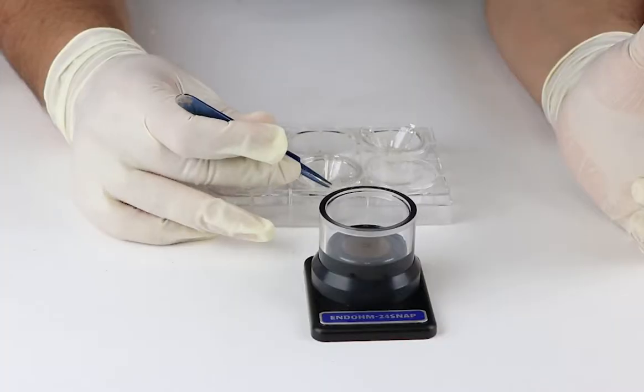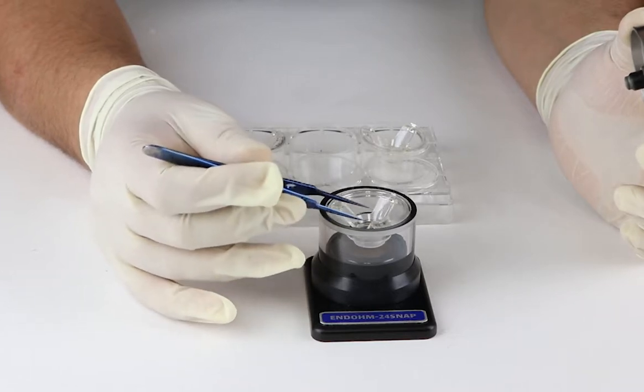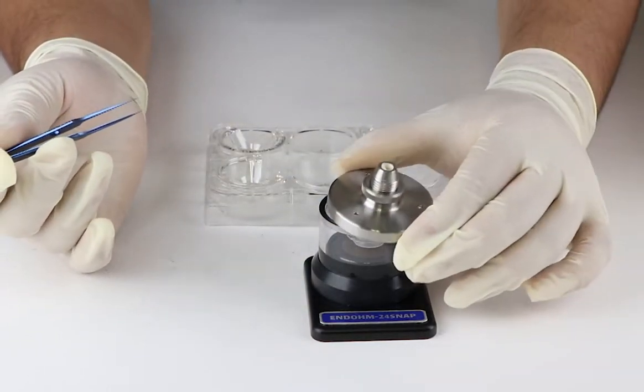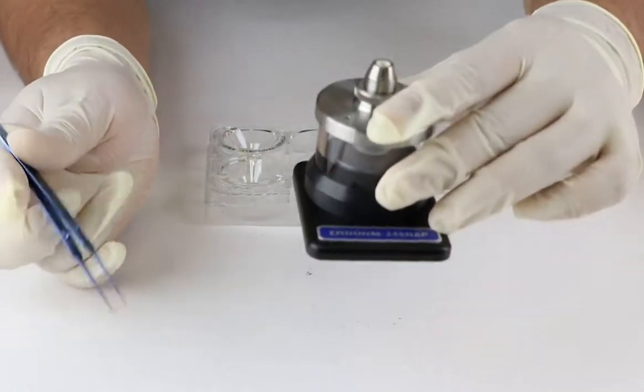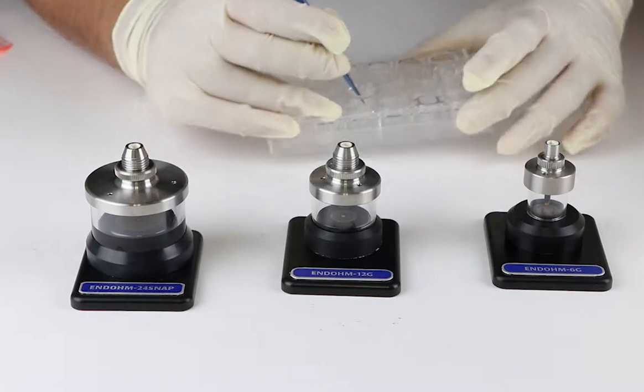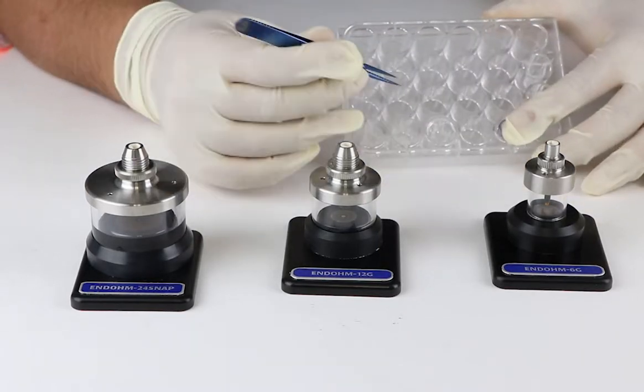The endohm chambers have specific chamber dimensions. For example, a 6-well hanging insert can stay hung inside an endohm 24 snap, and a 12-well hanging insert can hang inside an endohm 12G.